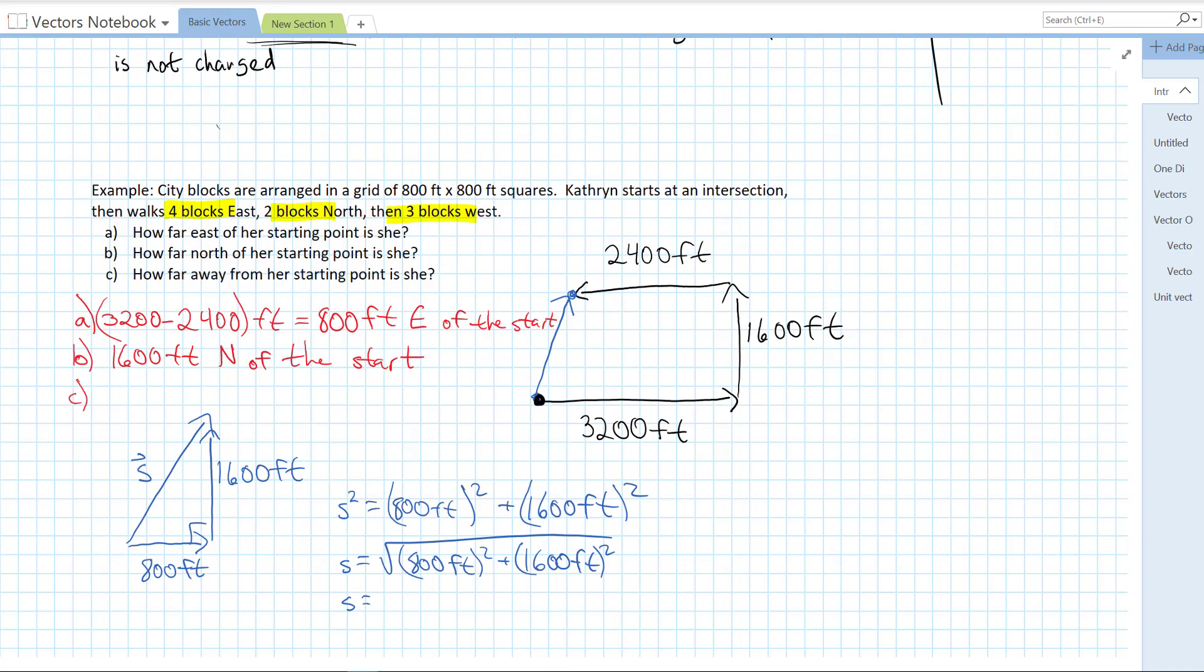That gives me 1788.85 feet. So to correct sig figs, which would probably be two sig figs, 1,800 feet from her starting position.